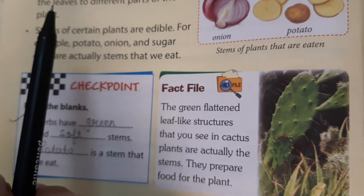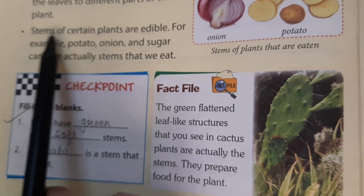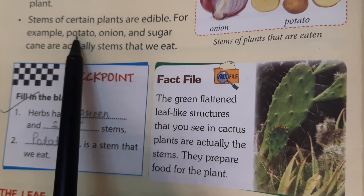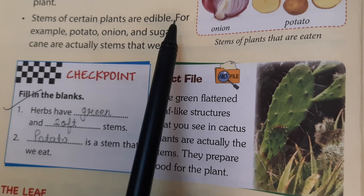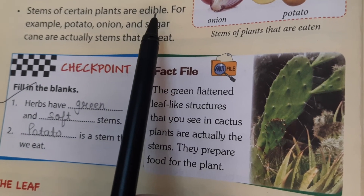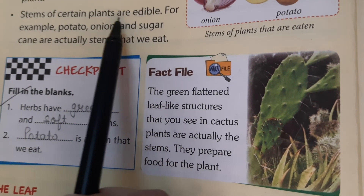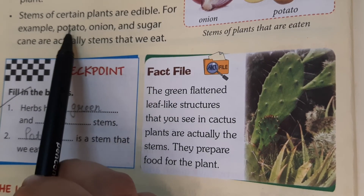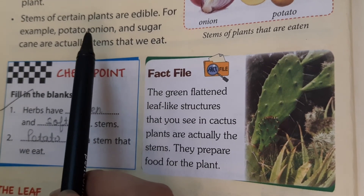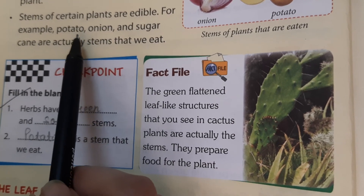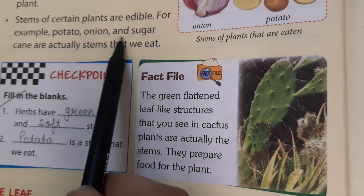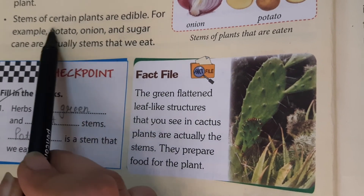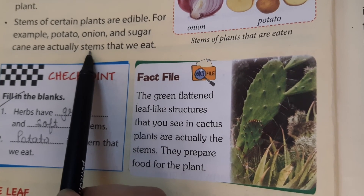The last function of stem is: stems of certain plants are edible. For example, potato, onion, and sugar cane — these are all stems that we can eat. So the onion that you all eat, and potato which goes into almost every vegetable dish, and sugar cane as well — these are all edible stems.